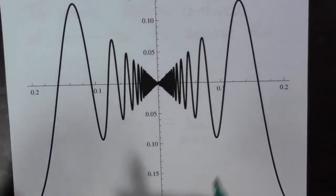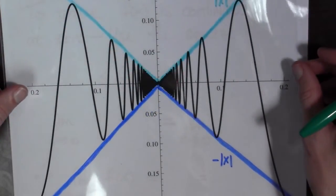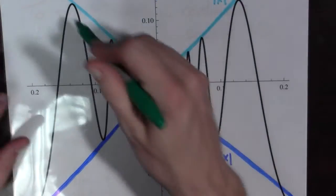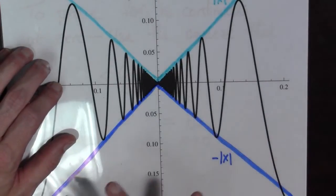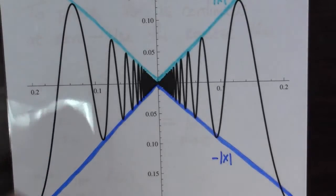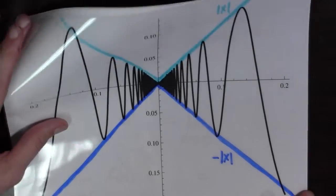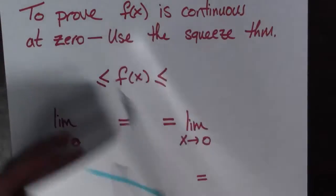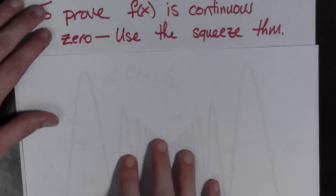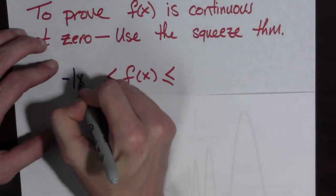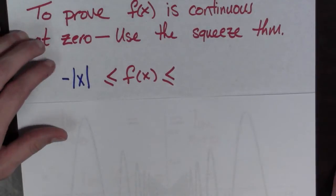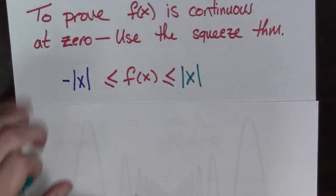So our function looks like so, and we need to find functions that bound it above and below. The functions that work are: the absolute value of x bounds our function above, and minus the absolute value of x bounds our function below. To prove f of x is continuous at 0, we use the squeeze theorem. We bound it: minus the absolute value of x is less than or equal to f of x is less than or equal to the absolute value of x.